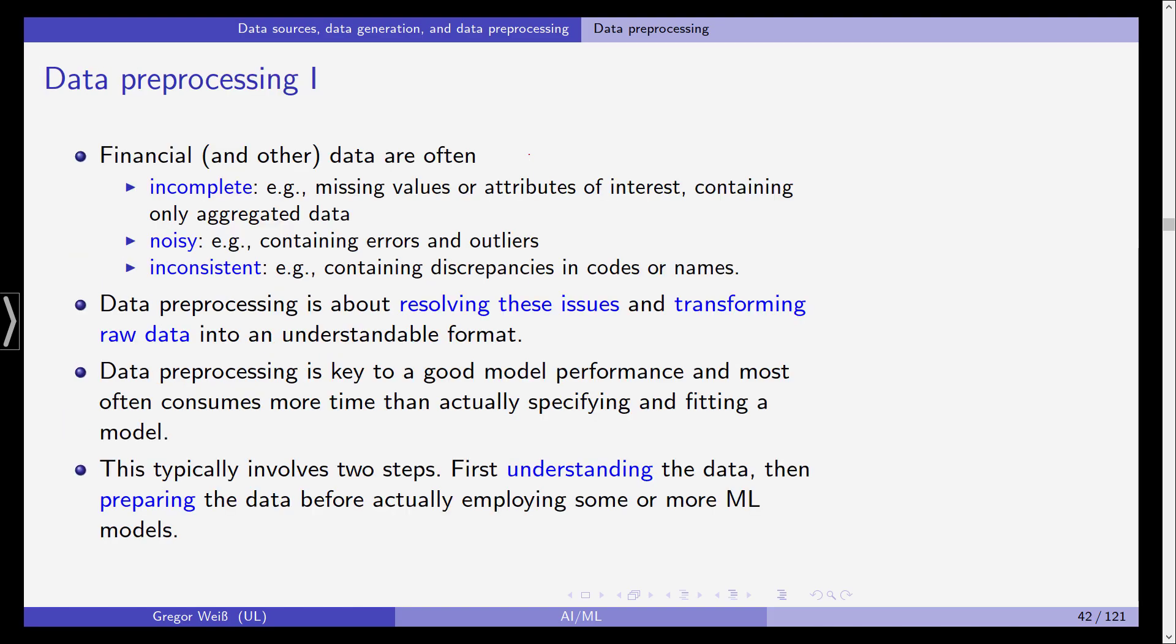We've talked about the different data sources we have at our disposal in finance. Nowadays we have financial markets data and alternative data sets. So we are complementing our data from balance sheets and income statements and from markets with data from Twitter, Facebook, but also geographic data, satellite images, etc.